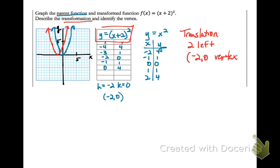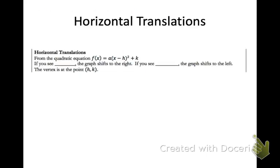Now let's make some generalizations about horizontal translations. From the quadratic equation in general vertex form, if you see h being subtracted, the graph shifts to the right. If you see h being added, the graph shifts to the left. The vertex can always be read directly from the equation as the point (h, k), where h is your x value and k is your y value.